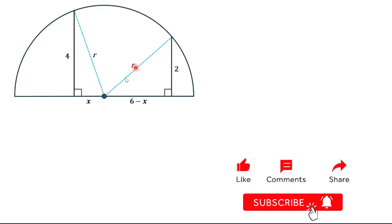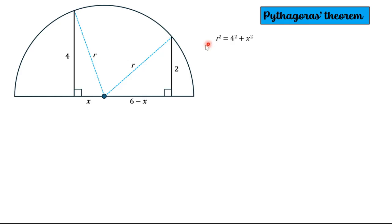We both have a hypotenuse of r and we can use Pythagoras to set up the following equations. So the first one, looking at this triangle, we have the hypotenuse squared, so that's r squared is equal to 4 squared plus x squared. Okay, we can simplify this to 16 and we can call this equation one.